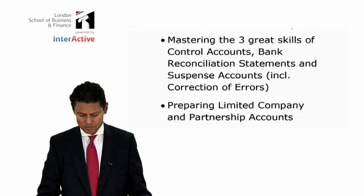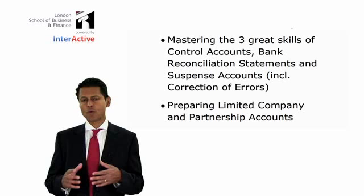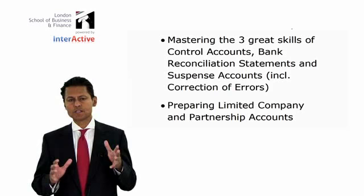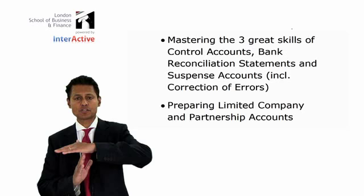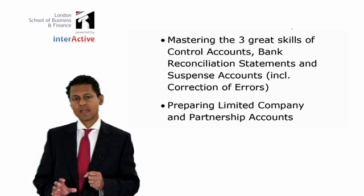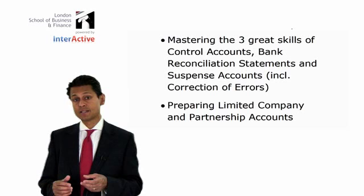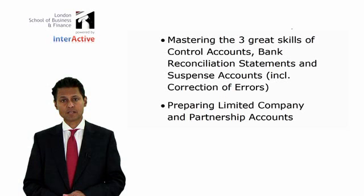What else is in this paper? Mastering the three great skills of control accounts, bank reconciliation statements, and suspense accounts. A suspense account is where there's a problem with the bookkeeping. When the proprietor or accountant tries to produce a trial balance and it doesn't balance, you produce a suspense balance — the difference. For example, if the debit side is ten thousand five hundred but the credit side is only ten thousand, you bring in another five hundred on the credit side. That's called a suspense account.